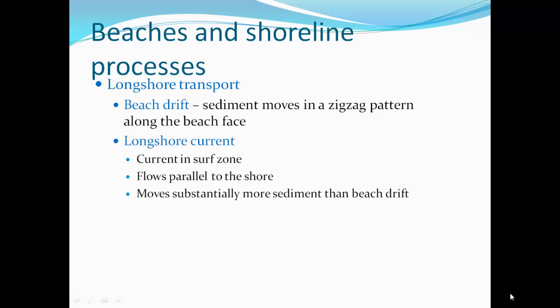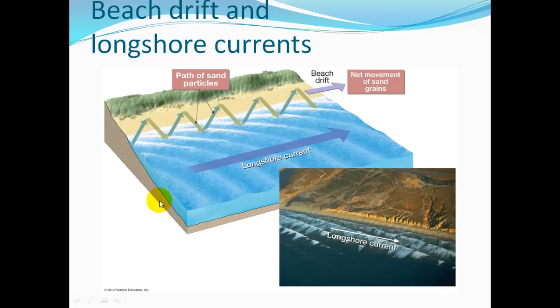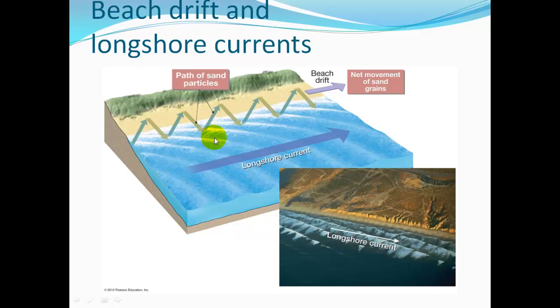Longshore transport: beach drift is sediment moving in a zigzag pattern along the beach. The longshore current is the current in the surf zone that flows parallel to the shore, moving far more sediment than beach drift. As waves approach, they produce a current that flows along the shore — this is what causes you to drift down the beach while swimming. Waves push sand diagonally up the beach and pull it back off the beach; this is beach drift, slowly moving sand up the beach.